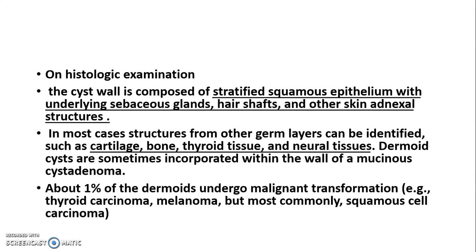On histology you will see stratified squamous lining epithelium with skin adnexal structures including sebaceous glands and hair shafts. Other structures include cartilage, bone, thyroid tissue, neural tissue, brain tissue, adipose tissue, and muscle bundles.